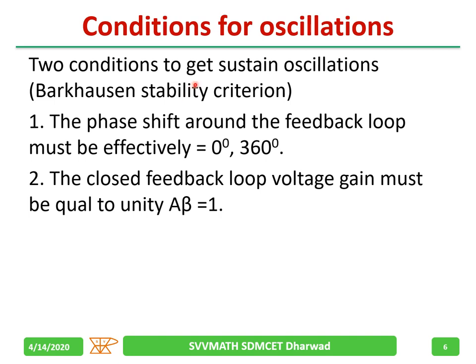Two conditions are required to get sustained oscillations. We call them Barkhausen's criteria. First, the phase shift around the feedback loop must be 0 or 360 degrees. Second, the closed loop feedback gain must be equal to 1 — A·β should equal 1.